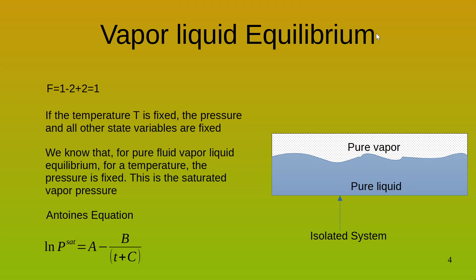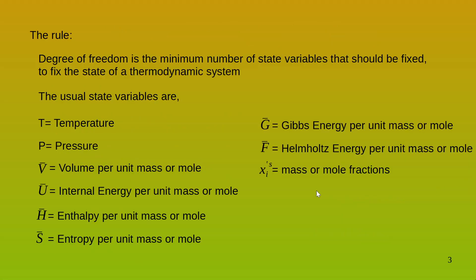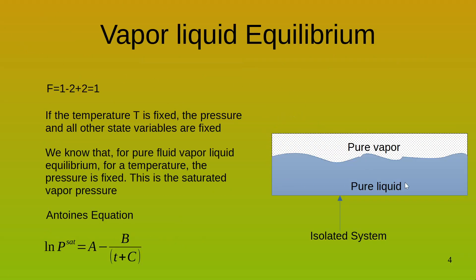Now let's take vapor-liquid equilibrium for a pure fluid. For a pure fluid, mole fractions do not apply to the Gibbs phase rule. For an isolated system with a pure fluid in equilibrium with its vapor, the fluids will be at equal temperatures and equal pressures, and that pressure is the saturated vapor pressure. Applying the Gibbs phase rule: F = 1 (component) − 2 (phases) + 2 = 1.